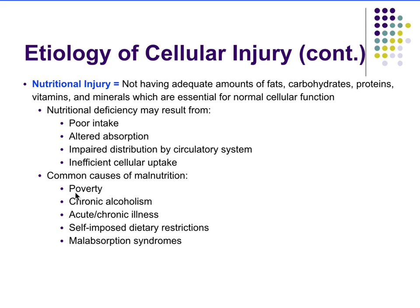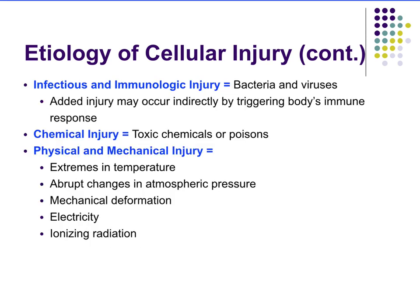Common causes of malnutrition include poverty, chronic alcoholism, acute and chronic illnesses, self-imposed dietary restrictions, and malabsorption syndromes. Other etiologic factors include infections and the immune response to injury — bacteria and viruses can cause cell injury, and the immune response itself can also lead to cell injury. Chemical injury due to toxic chemicals or poisons, and physical and mechanical injury from extreme temperature changes, abrupt atmospheric pressure changes, mechanical deformation, electrical issues, or ionizing radiation are also causes.